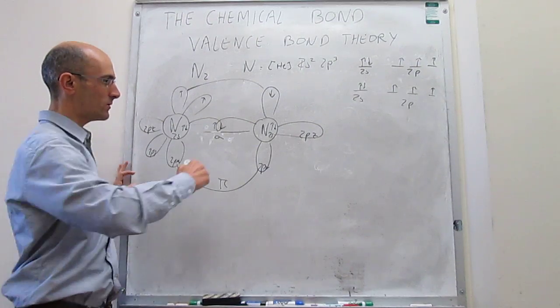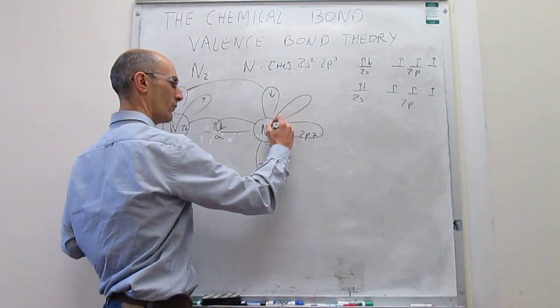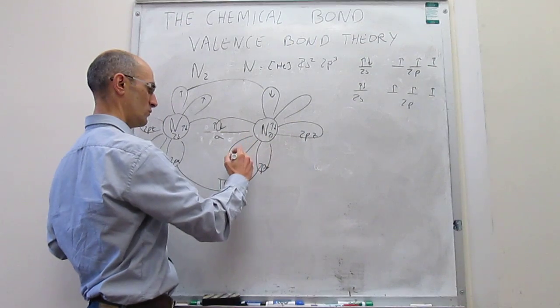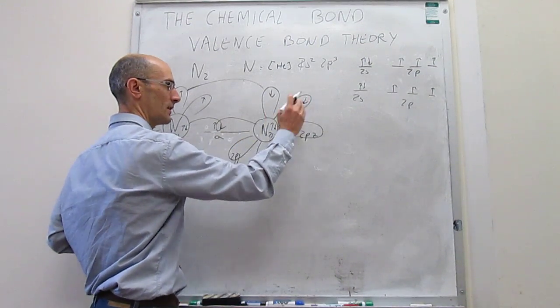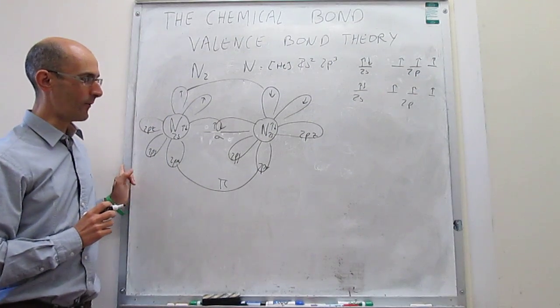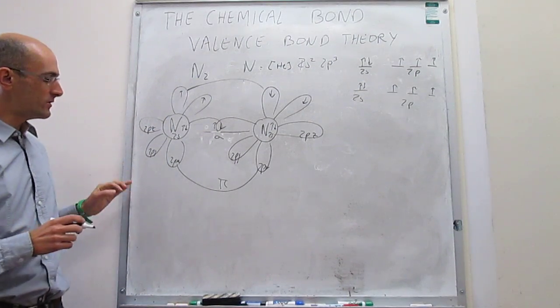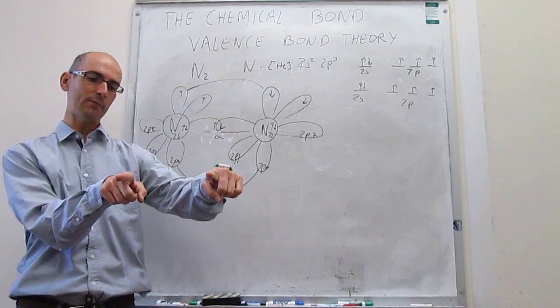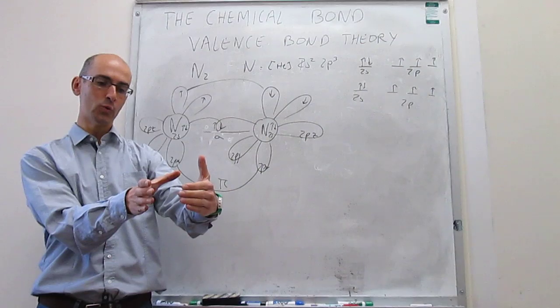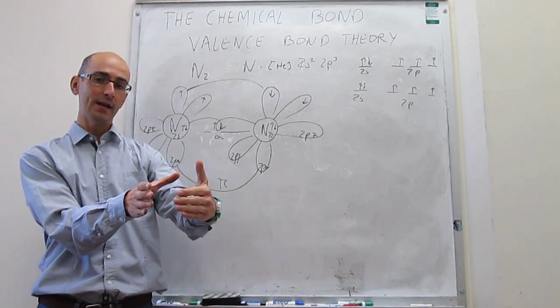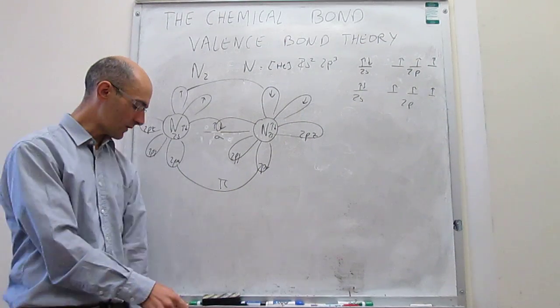Now, that's not the whole story here. Notice that for nitrogen, you also have a 2py orbital coming in and out of the plane, and the question is whether you can form another pi overlap. And the answer is yes. Notice that now those two orbitals are coming in and out of the plane, and again, they can overlap as long as the two electrons have antiparallel spins, and you only have two electrons.